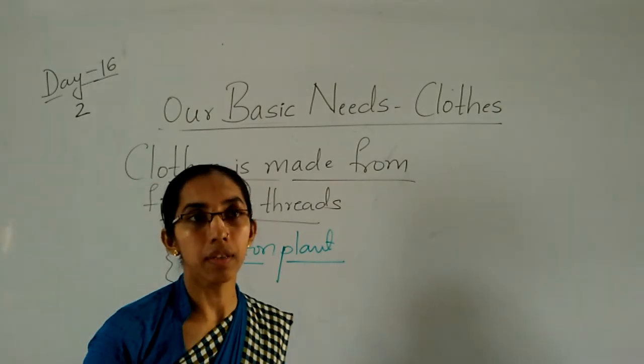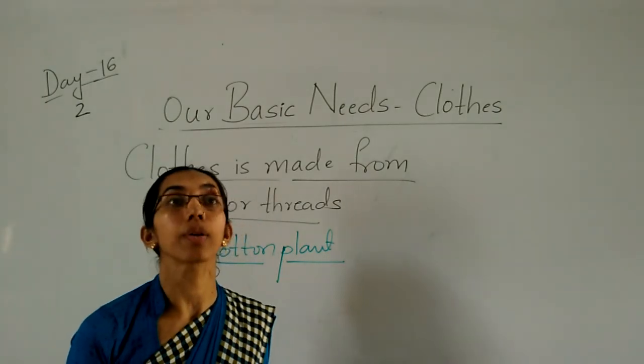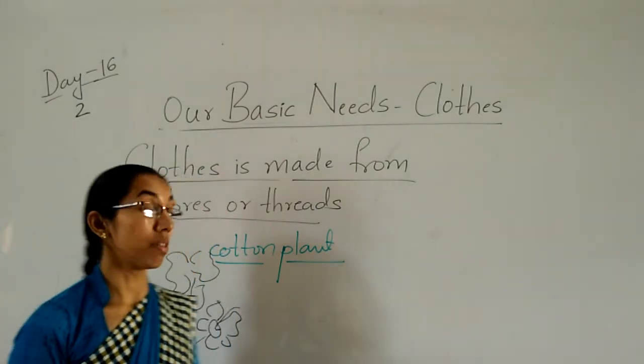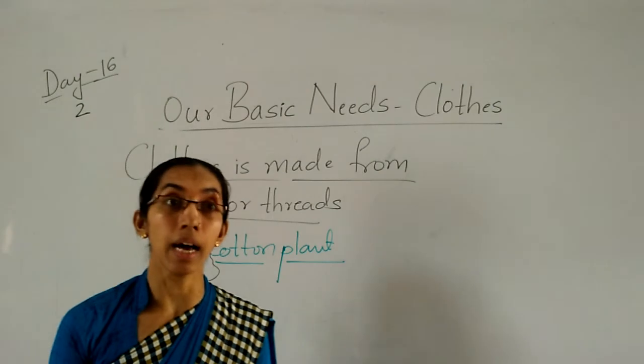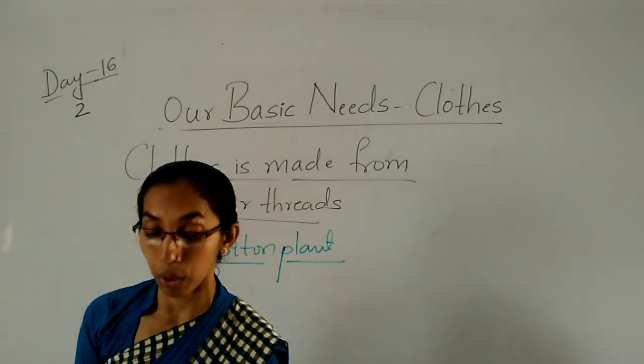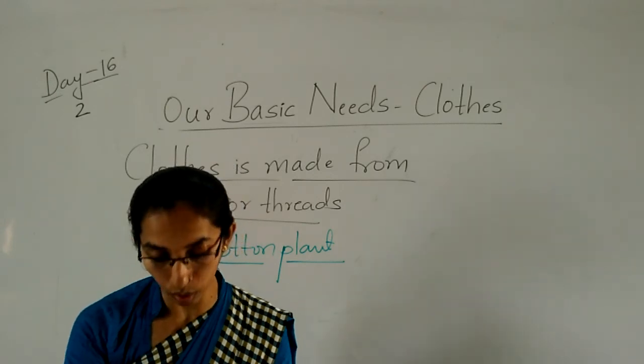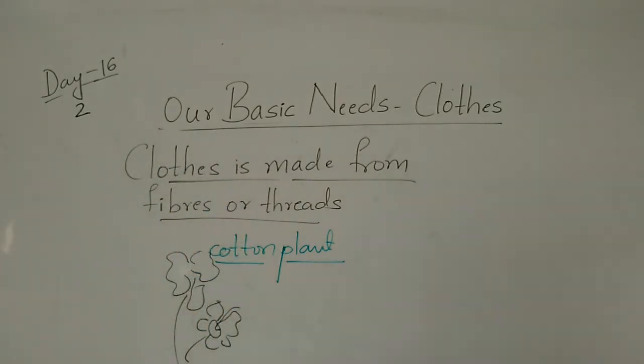Cotton cloth is made up of cotton. During summer you start wearing cotton clothes. That cotton cloth is made up of the cotton plant. Let me show you an image so you will understand. See here children — this is the cotton plant. This white color that you can see now — it is cotton. So cotton cloth is made up of cotton only.